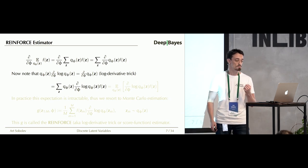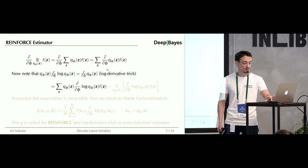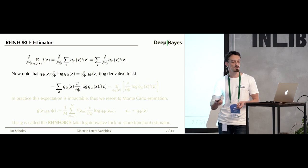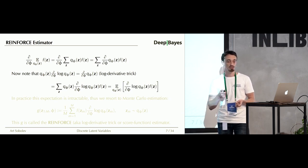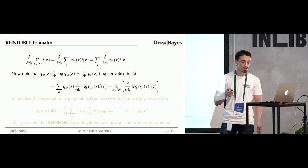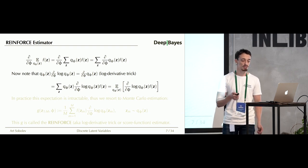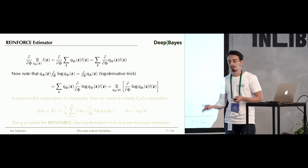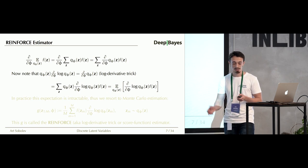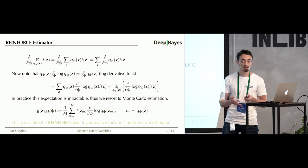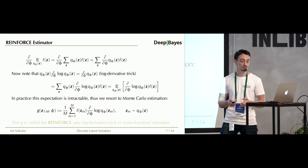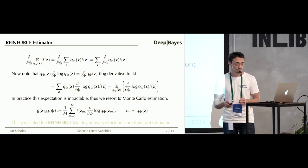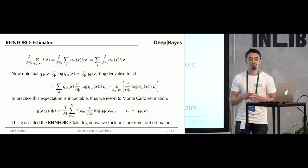Substituting the log-derivative trick into the expression gives us a sum that is essentially an expectation over the same distribution q_phi of f(Z) multiplied by the gradient of the log probability. This is again an expectation over a possibly exponential number of summands, so we go for Monte Carlo estimation. Assuming we can efficiently draw samples from q, we form the following Monte Carlo estimate using M i.i.d. samples from q. This estimator g is usually called the REINFORCE estimator — also called the score function estimator or log-derivative trick estimator.